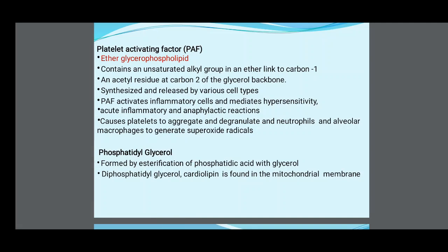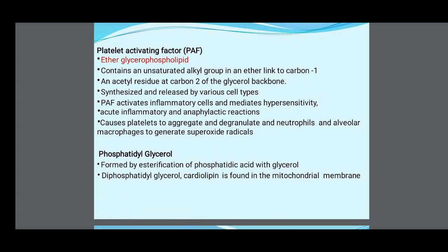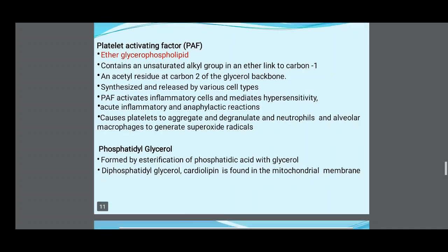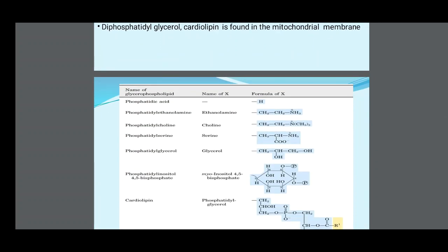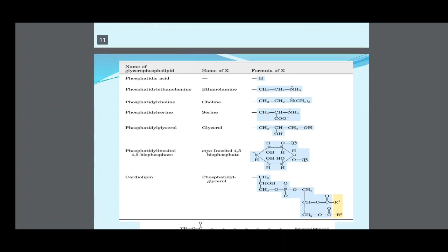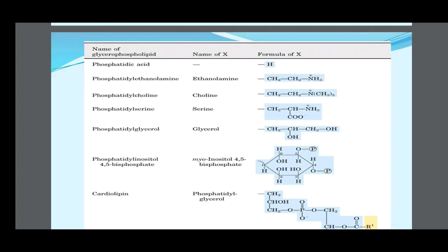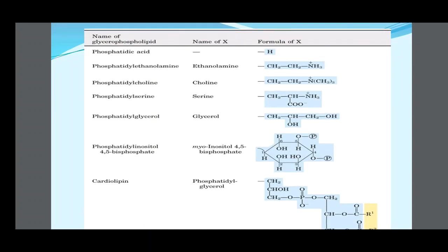Phosphatidylglycerol is formed by esterification of phosphatidic acid with glycerol. Diphosphatidylglycerol (cardiolipin) is found in the mitochondrial membrane. The glycerophospholipids and their substituents at the X position include: phosphatidic acid (H), phosphatidylethanolamine (ethanolamine), phosphatidylcholine (choline), phosphatidylserine (serine), phosphatidylglycerol (glycerol), phosphatidylinositol-4,5-bisphosphate (myoinositol-4,5-bisphosphate), and cardiolipin (phosphatidylglycerol).